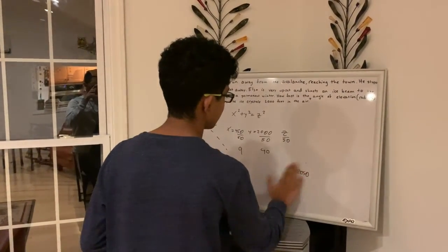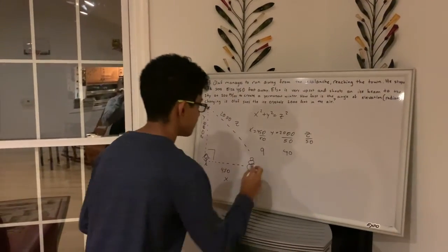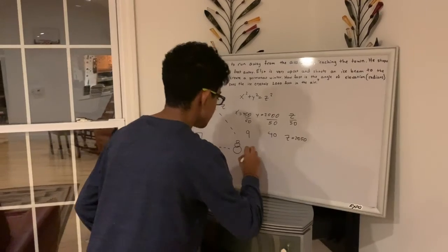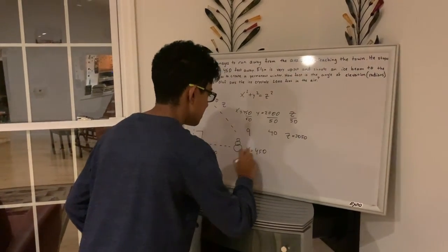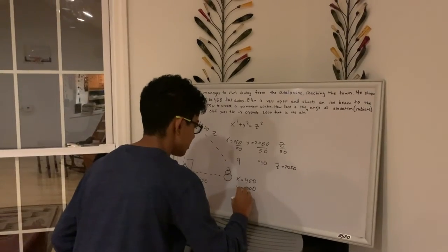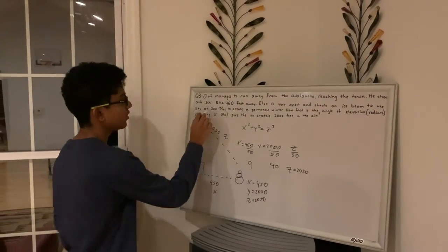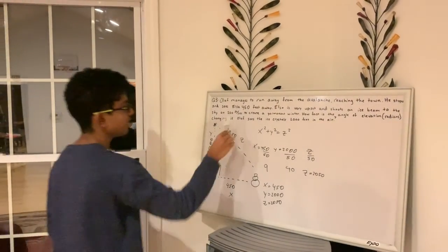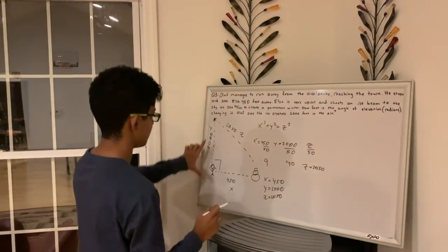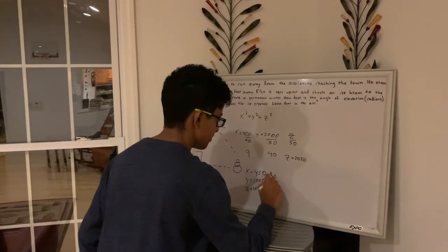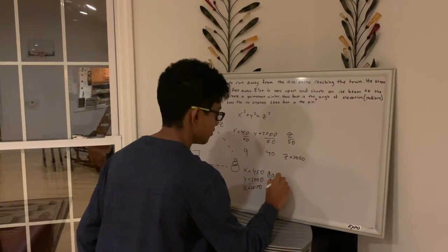So that is the length of the hypotenuse. So we can rewrite everything that we know so far. So x is 450, y is 2000, z is 2050. And we also know from the question that the ice beam is increasing at a rate of 200 feet per second, which is on this motion, so which would be y. So that means dy over dt equals 200.